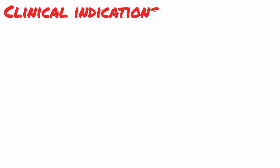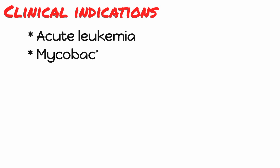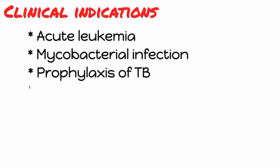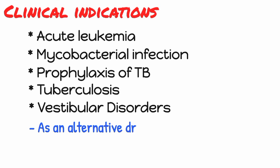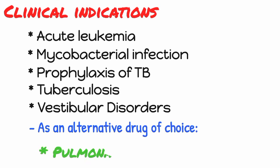Isoniazid is primarily indicated in conditions like mycobacterial infection, prophylaxis of TB, and tuberculosis. It can also be given in adjunctive therapy as an alternative drug of choice in pulmonary TB.